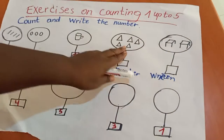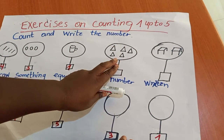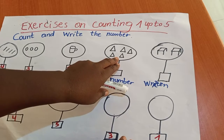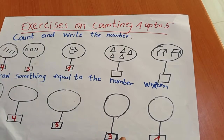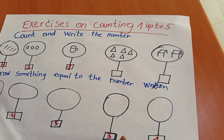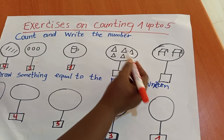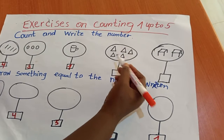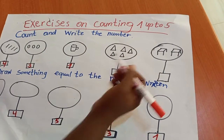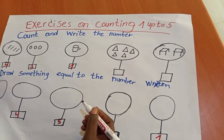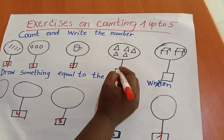Here I have different shapes. I am going to count them. One, two, three, four, five. I am going to write the number five.